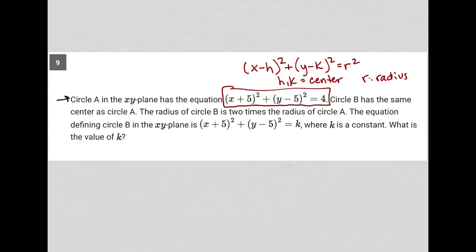Okay, so that's circle A. Circle B has the same center as circle A. Well what is that center? That would be negative 5, right, because it's always the opposite sign. It's a negative h here, it's a positive 5, which makes our h equal to negative 5, and having a negative 5 here means our k is equal to positive 5 actually. So our center is negative 5 comma 5, and that's for A and B because they share the same center.